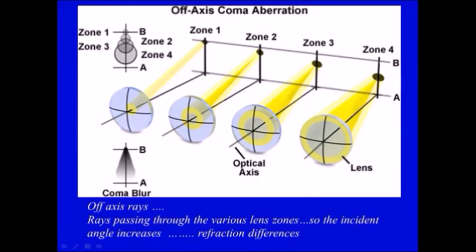Coma occurs when rays coming from the object instead of hitting the lens along the axis it hits the lens off the axis.